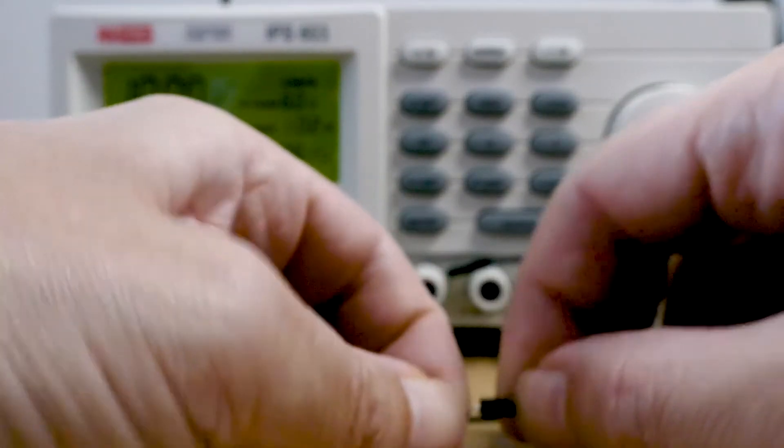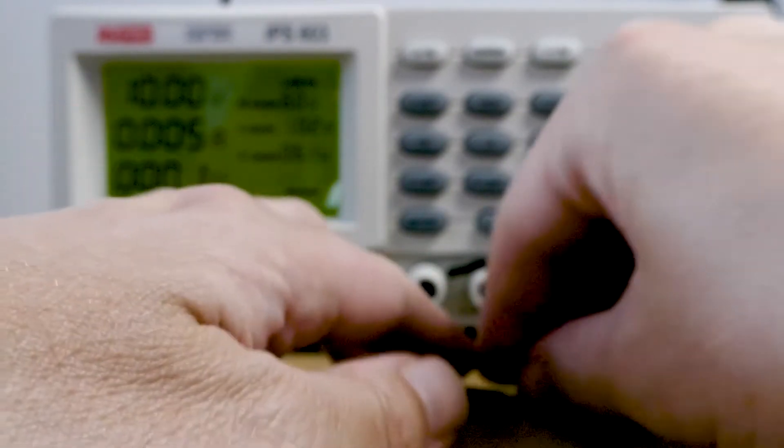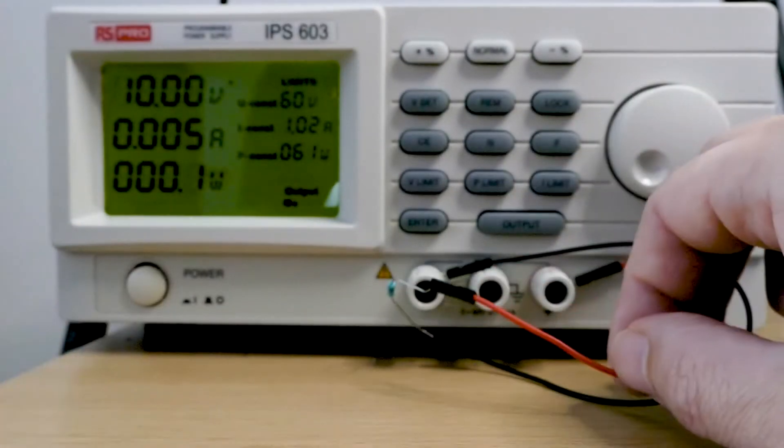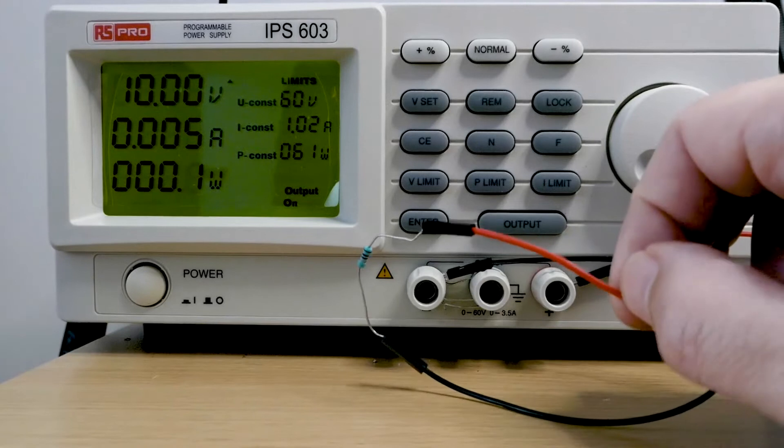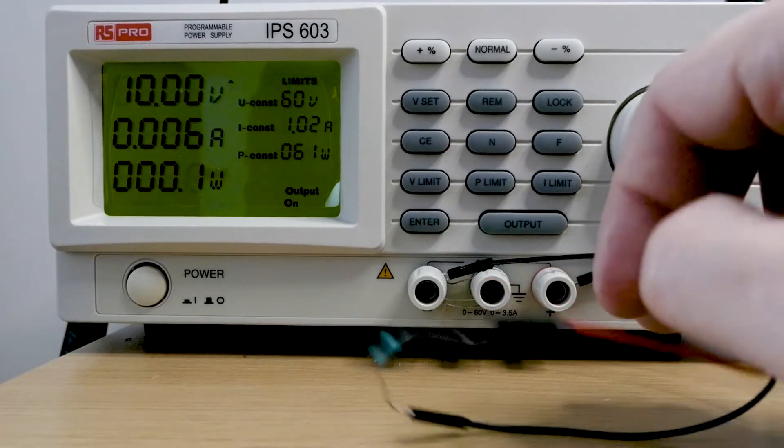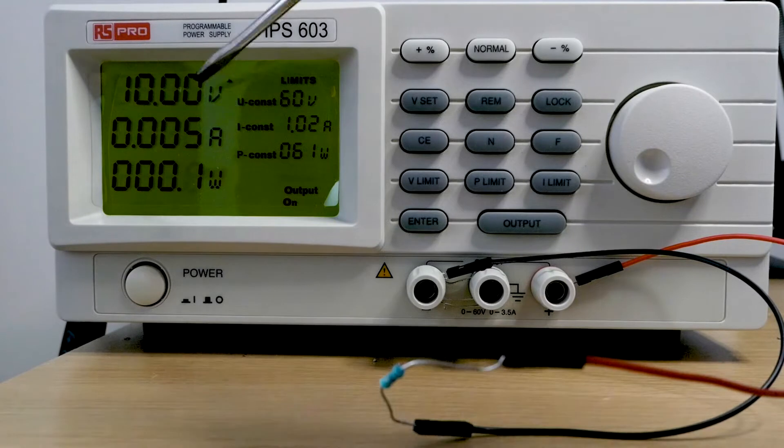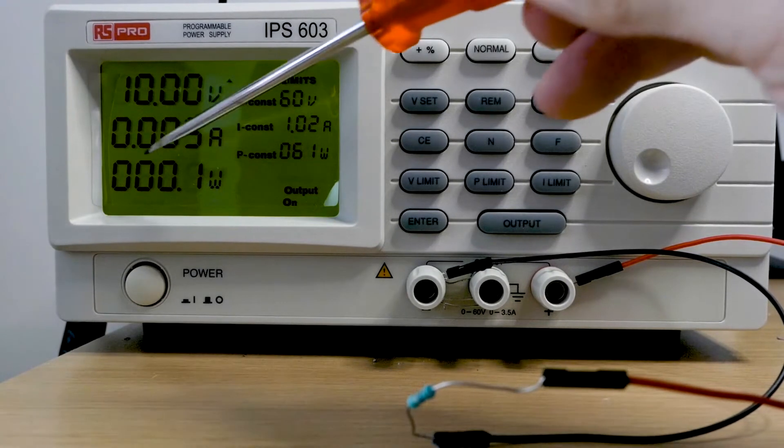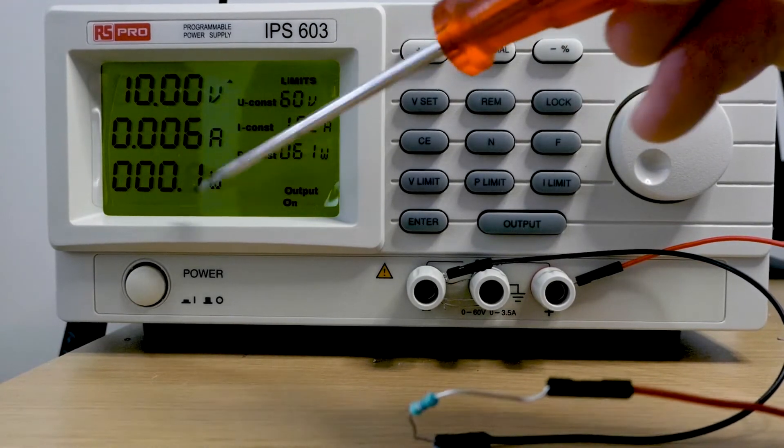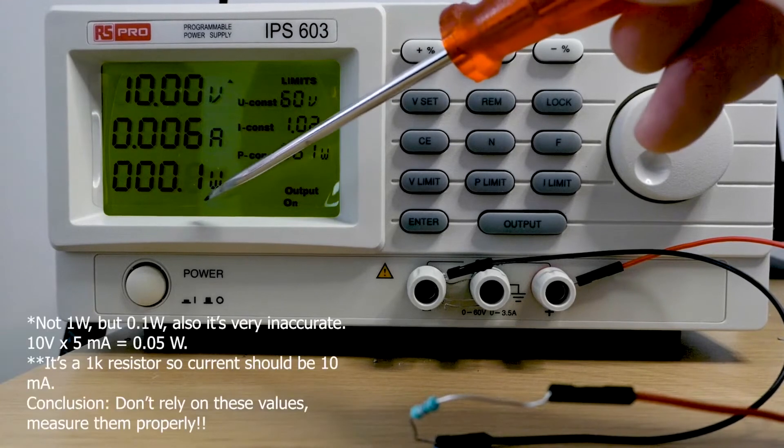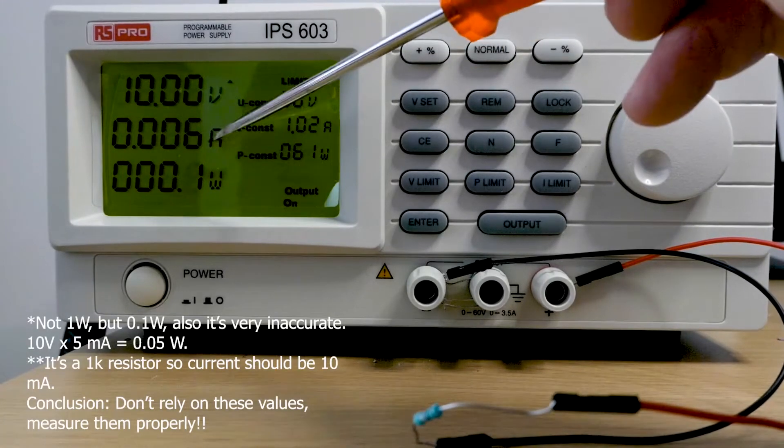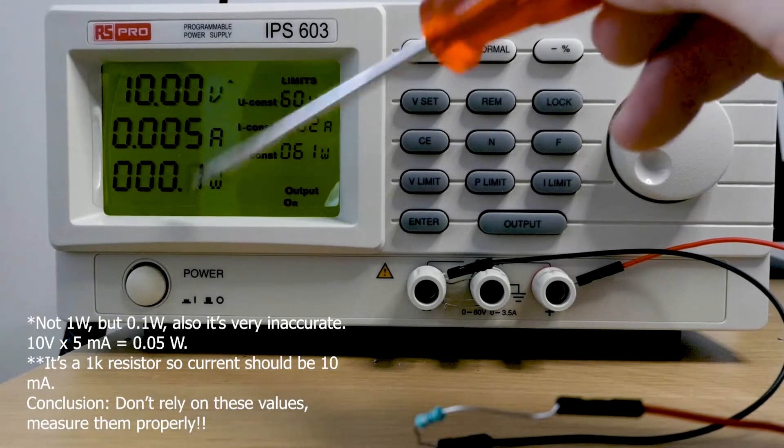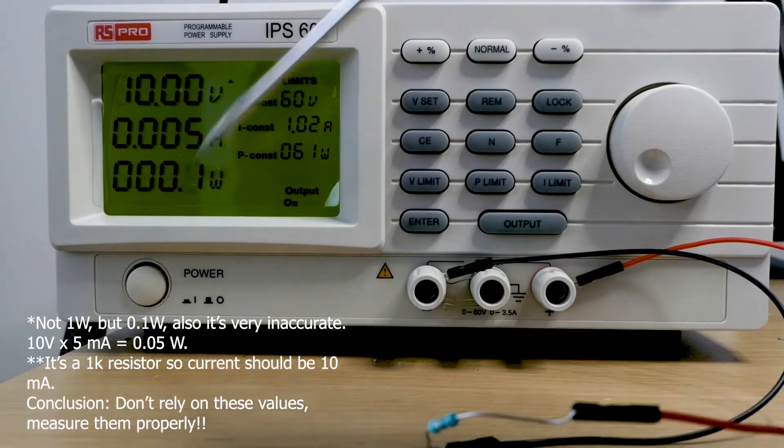You can immediately see now on the display that the current has gone up. Here's our 10 volts, we're now drawing 5 milliamps, and that's dissipating one watt. Basically all it's doing is multiplying this number by that number and displaying it here. Obviously there's some errors because it's such a low value.